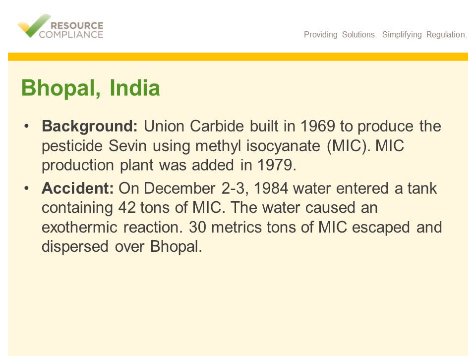Here is a little background regarding the event. Union Carbide owned the plant that was built in 1969 to produce the pesticide using methyl isocyanate, or MIC. An MIC production plant was added in 1979. The accident occurred on the night of December 2nd and 3rd, 1984, when water entered a tank containing 42 metric tons of MIC. The water caused an exothermic reaction in the tank, which led to 30 metric tons of MIC being released and dispersed over Bhopal.